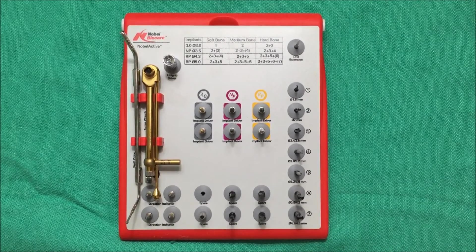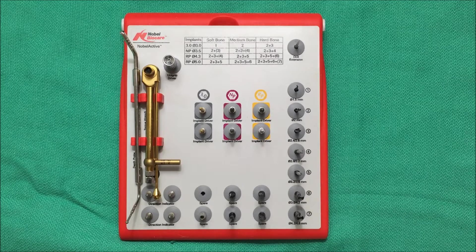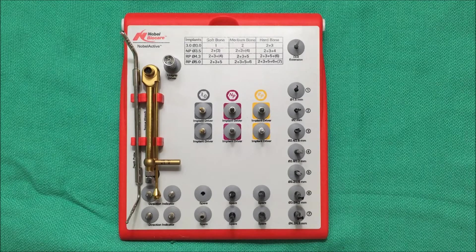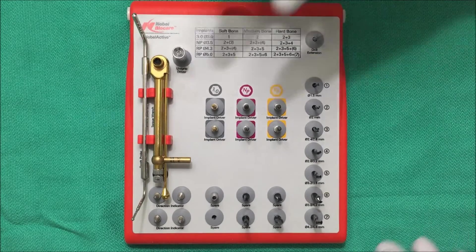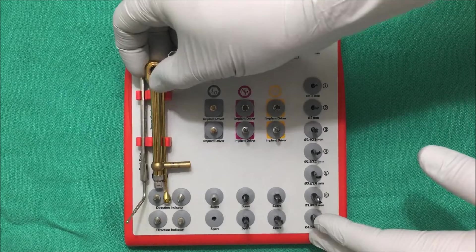Nobel recommends that you set the torque on your motor to 25 newton centimeters when inserting the implant. I set mine to 35. Once you've got your implant all the way in, you can use this guy to do the final torque.